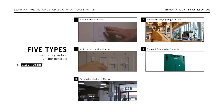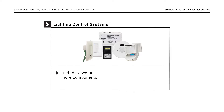The Energy Code outlines how each control system should operate to make sure that all functions of the mandatory lighting controls are permitted by the system when working together. Lighting control systems include two or more components. A Certificate of Installation, NRCI-LTI-E, must be submitted for projects where energy management control systems or lighting control systems are installed to certify compliance with the energy code.